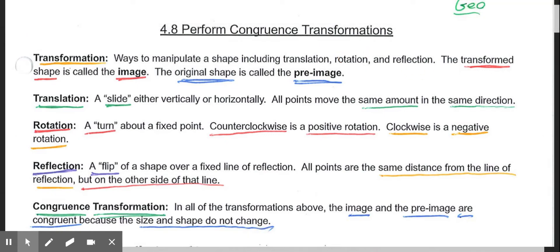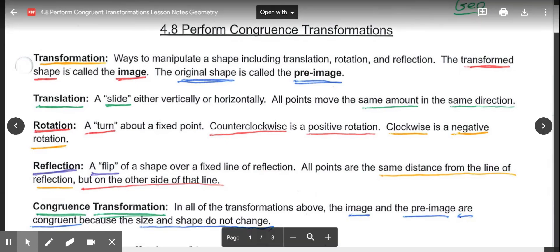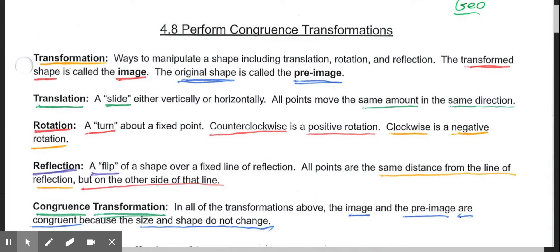Transformations are ways to manipulate a shape that include a translation, a rotation, and a reflection. The transformed shape, the final shape, is known as the image. The original shape before we do a transformation is called the pre-image.